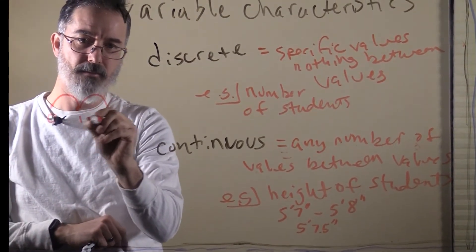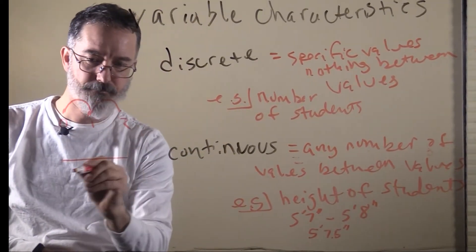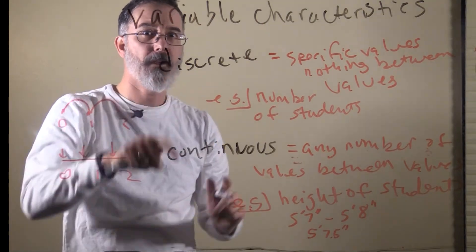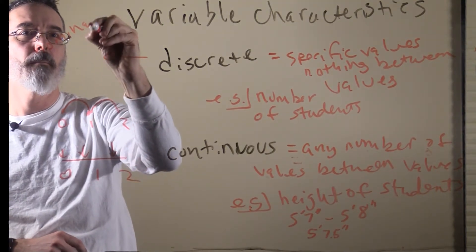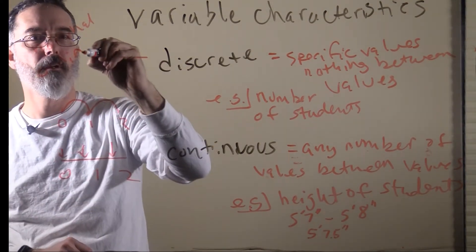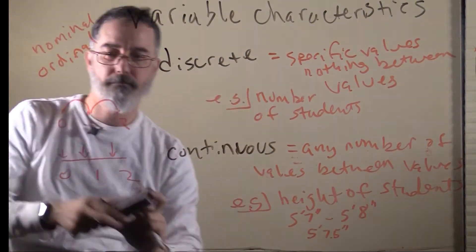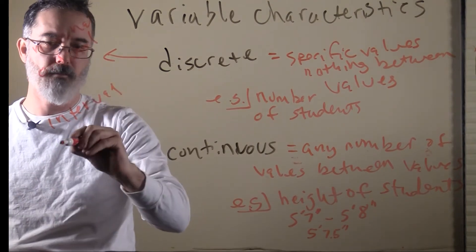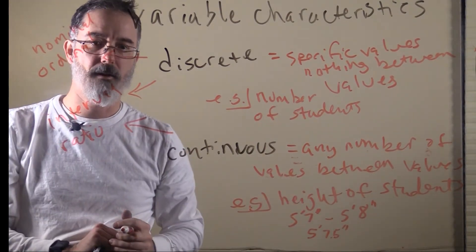For discrete variables like number of students, it would be zero, one, or two — you can't have one and a half students. For continuous variables, you can be anywhere along the line. Comparing these to the scales of measure: nominal variables are always discrete because you are always a category and can't be halfway between two. Ordinal are always discrete because you have a rank — first, second, third. For interval and ratio, they can be either discrete or continuous, depending on the specific example.